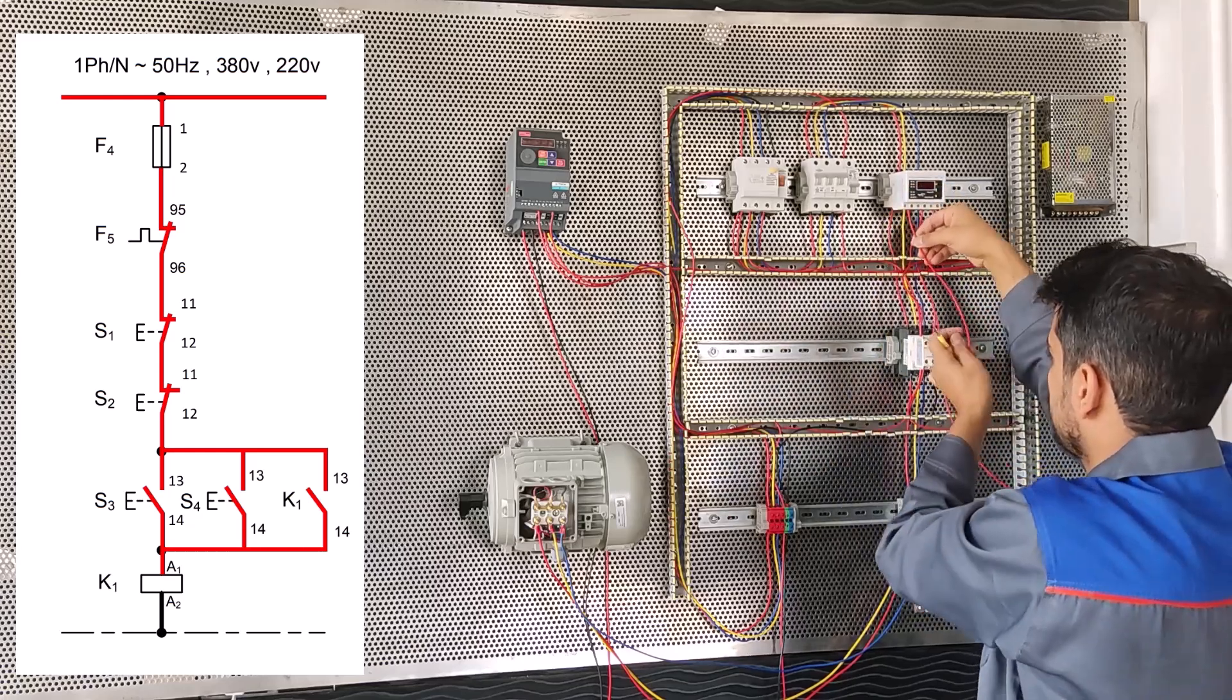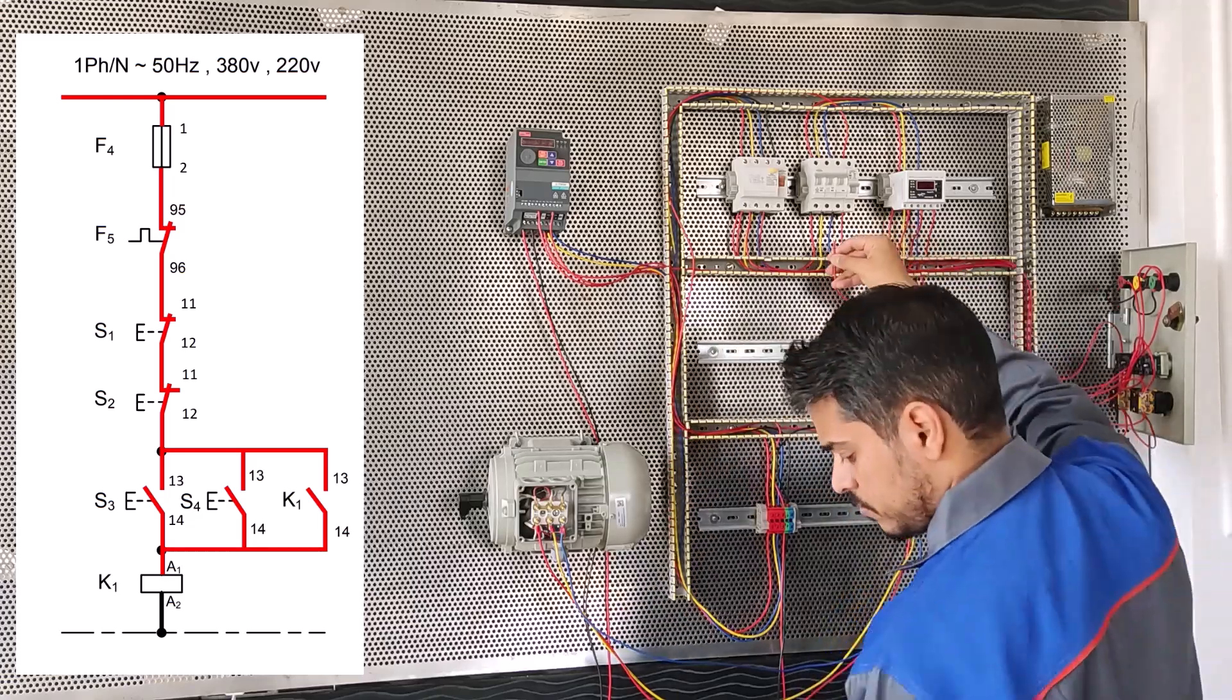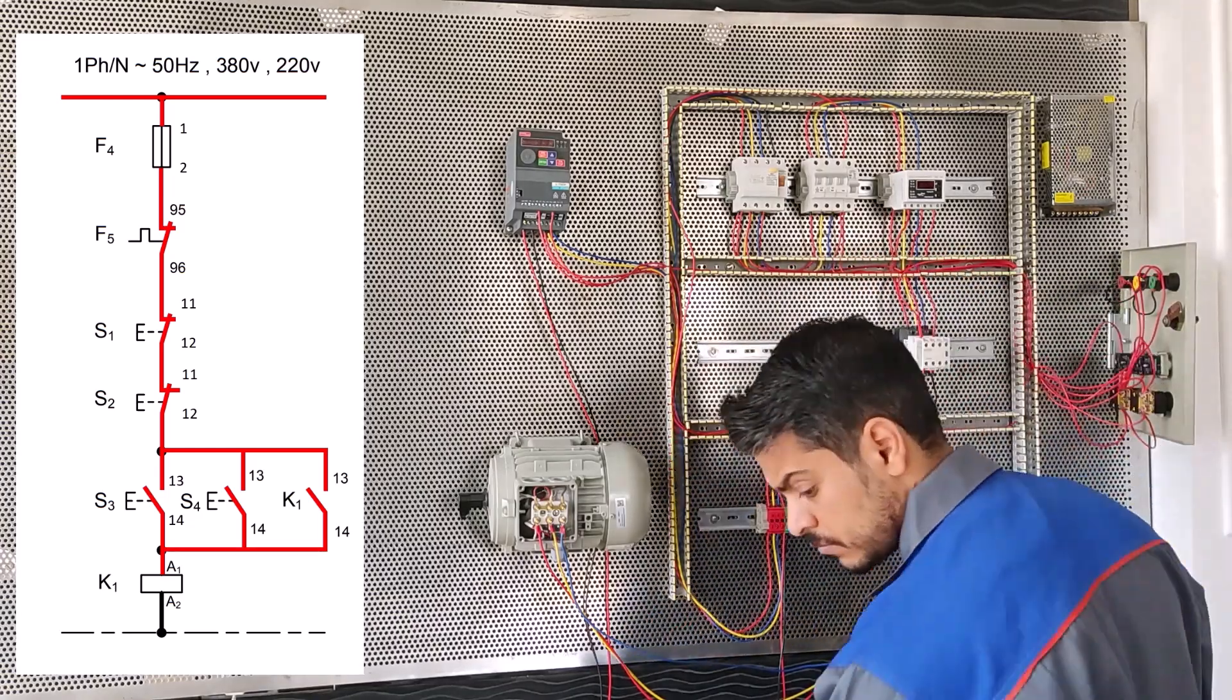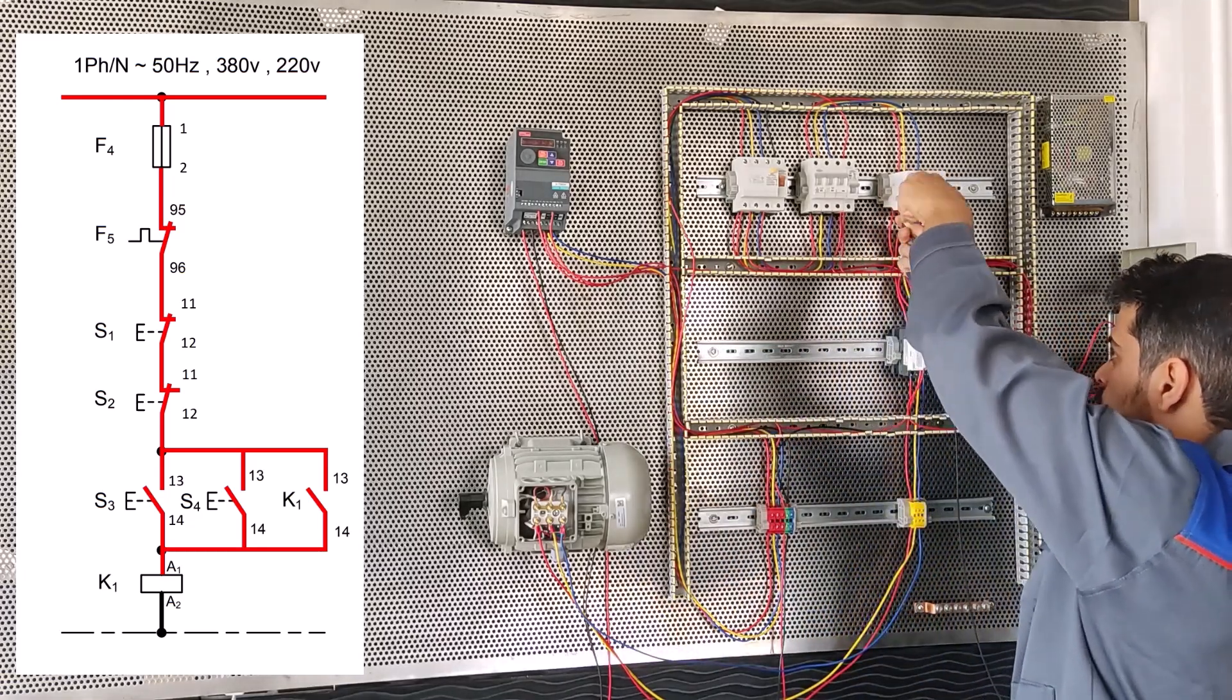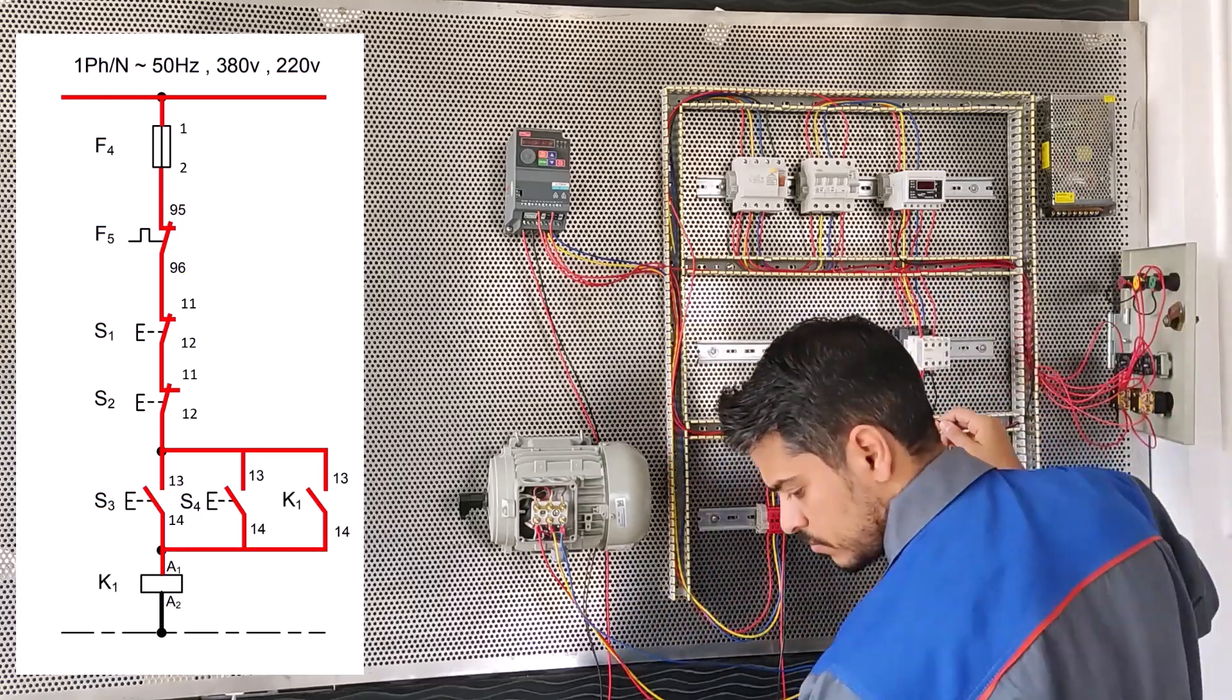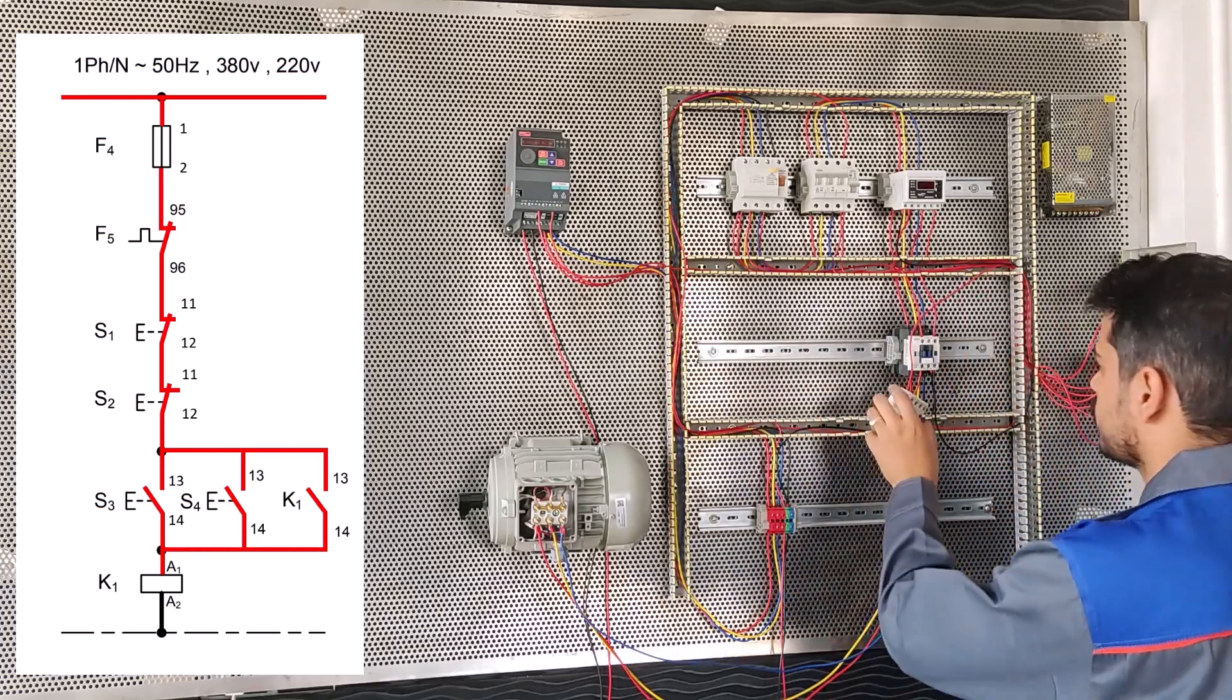Now we have to connect phase and zero to the load control. This is the black wire. The wire should connect to A2 because it is neutral.